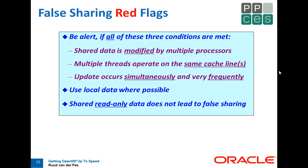This is why we recommend in OpenMP to use local or private data where you can. When you have private data, nobody else will know about it — that's what you want. One of the golden rules for OpenMP performance is to only use shared data when you have to; the rest you should make private. Keep in mind: if you have read-only data, it's fine — you can have gigabytes of read-only data and nothing will happen. It's when you modify the data that false sharing occurs.